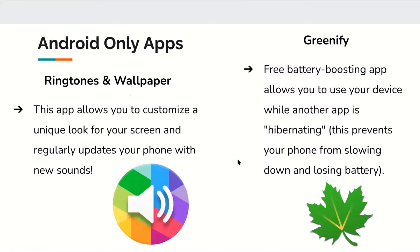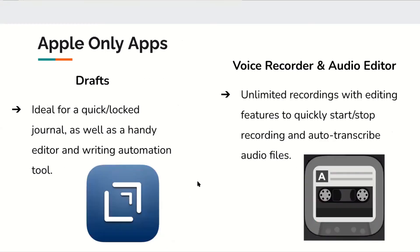Some apps are only available on Google Play, including Ringtones and Wallpaper, which lets you customize your screen and regularly updates your phone with new sounds, and Greenify, a free battery-boosting app that allows you to use your device while another app is hibernating to prevent your phone from slowing down and losing battery. Apps exclusive to the Apple App Store include Drafts, an ideal app for a quick journal and writing automation tool, and a Voice Recorder and Audio Editor that allows unlimited recordings with editing features and auto-transcription.